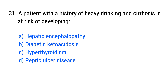Question number 31. A patient with a history of heavy drinking and cirrhosis is at risk of developing? The right answer is option A: Hepatic encephalopathy.